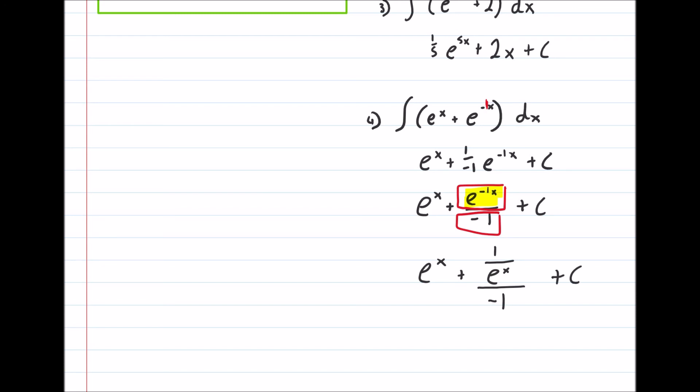And this, this bit here, well, that can be simplified, because there's only a minus 1 on the bottom. So instead of having the minus 1 on the bottom, I'm just going to put the minus here, get rid of that minus 1, plus c. So that's that done, guys. Thank you.